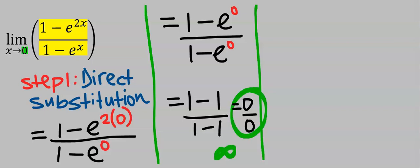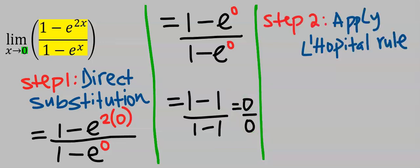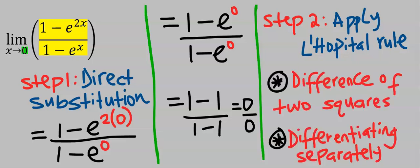Direct substitution failed. Because step one failed, we apply L'Hôpital's rule. In applying L'Hôpital's rule, we have two options: either use difference of two squares, or use differentiation.